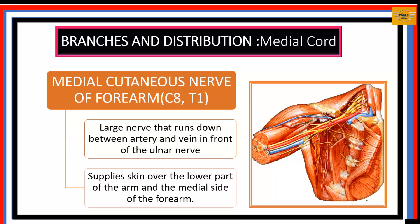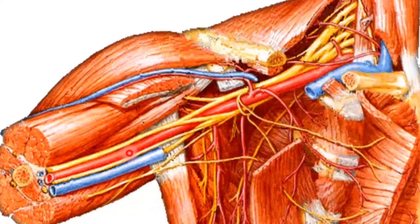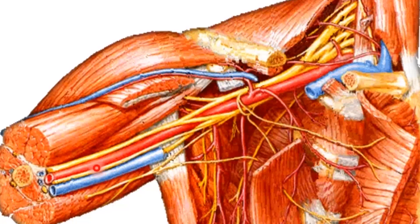The medial cutaneous nerve of the forearm also has root value C8 and T1, and is larger than the medial cutaneous nerve of the arm. It lies anteriorly between the axillary artery and axillary vein. Deep to it lies the ulnar nerve, with the axillary artery lateral and the axillary vein medial. This nerve supplies the skin over the lower part of the arm and the medial side of the forearm.